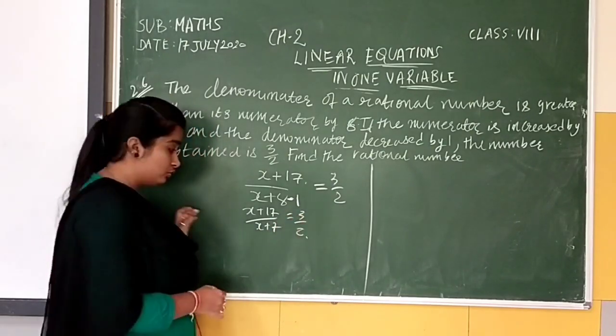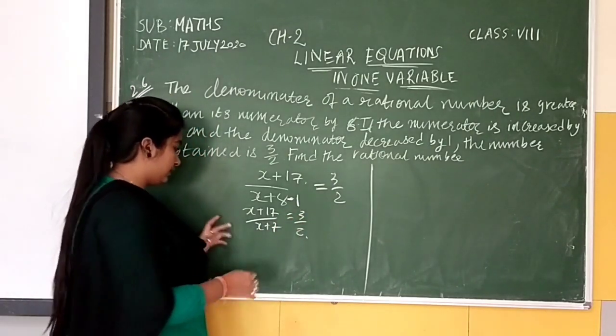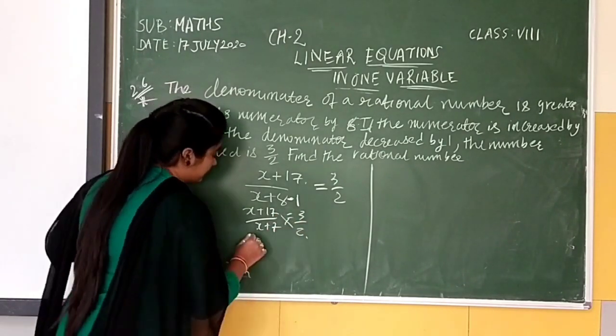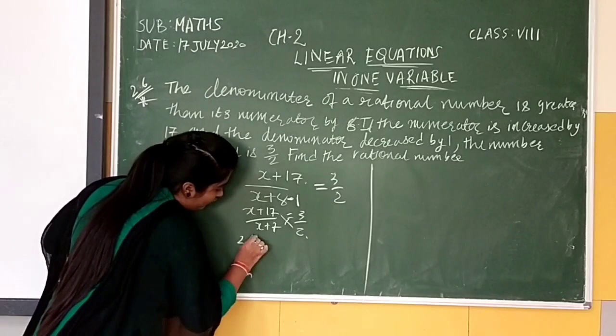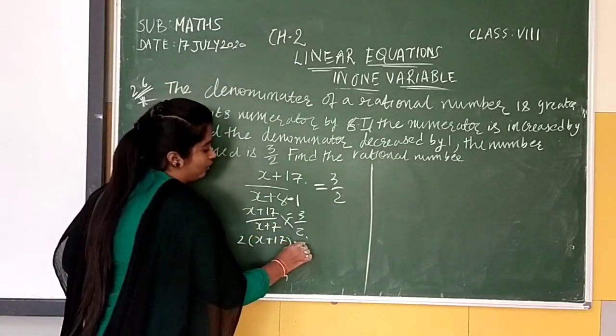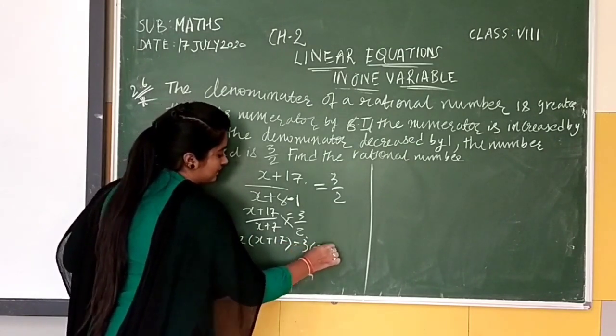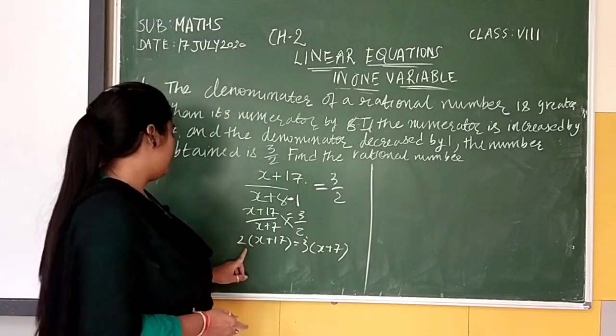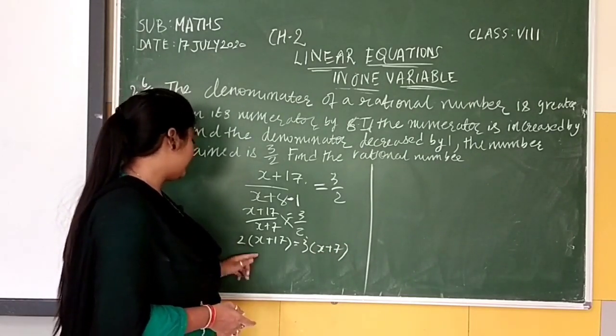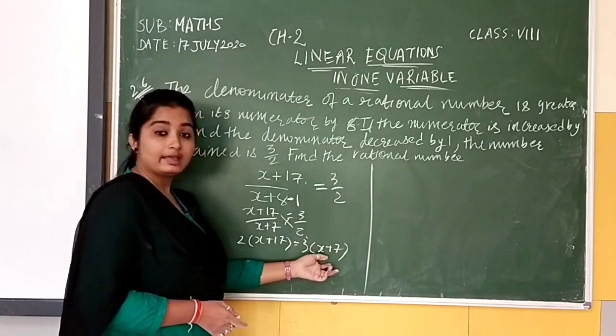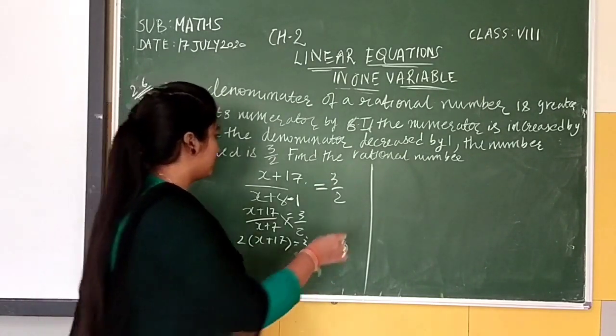Now what can we do to equation? We will do cross multiplication. So joh hummehra 2 hai, woh X plus 17 se multiply hoga. Or yaha joh hummehra X plus 7 hai, woh 3 se multiply hoga. Now we have 2 multiply by X plus 17 and 3 multiply by X plus 7. Ab hum isko solve karenge.